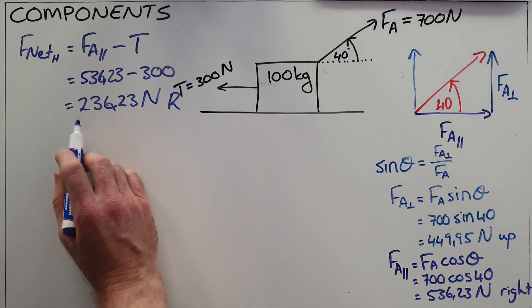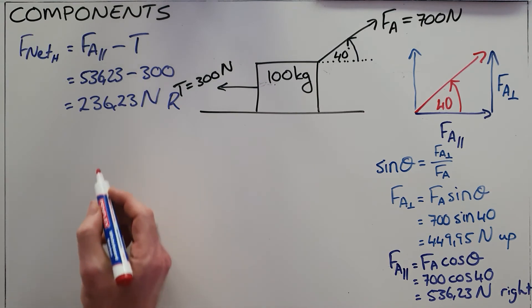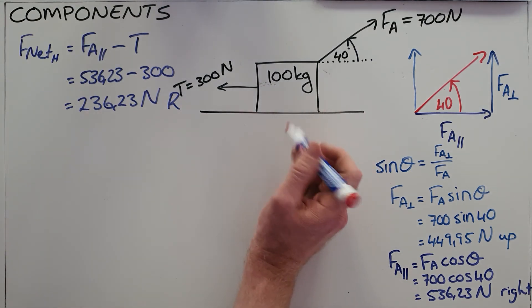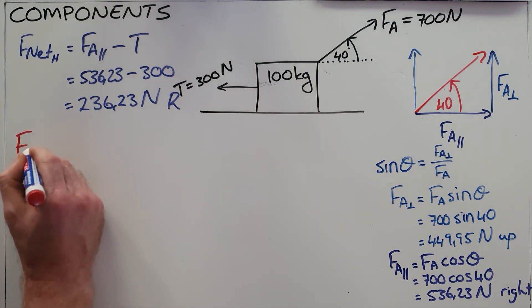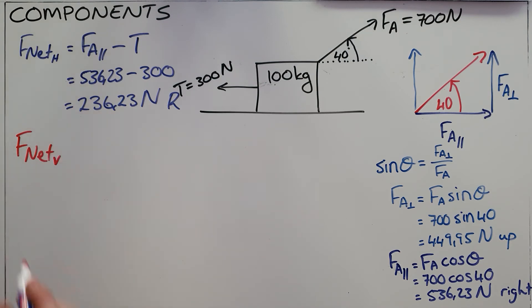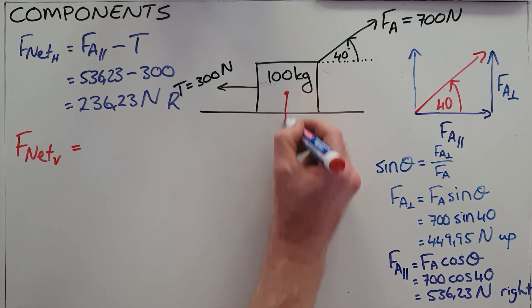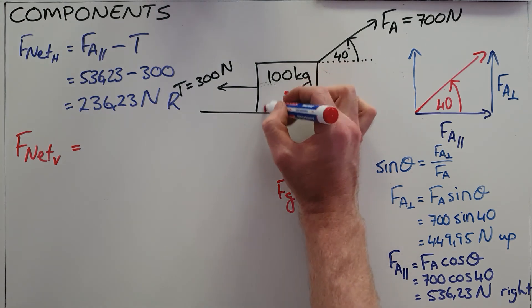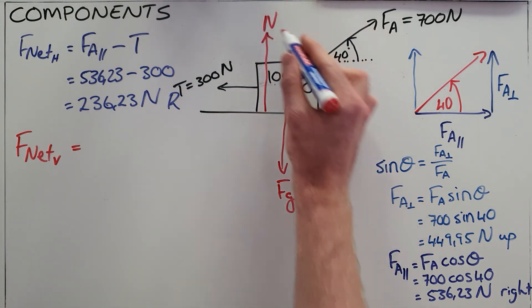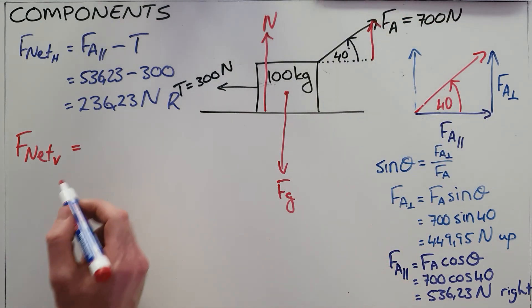We can then use that in determining whether or not it can overcome friction, but before we do that, we need to first determine what the normal force acting on this object is. Once again, this object is clearly not being lifted off the surface or sinking into the surface, which means that our net vertical force, also known as the net perpendicular force or the net Y force, must be equal to the force of gravity that is pulling this object downward, minus the two forces that are essentially lifting or pushing the object upwards, those being the normal force and the perpendicular component of the applied force.